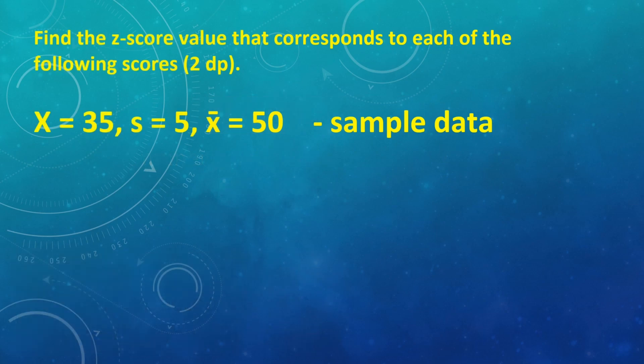Next to this is you're going to find the z-score. Given the following sample data, you're going to use the z-score formula to find the z-score of the given. Afterwards, you're going to substitute the given and manipulate. The answer is negative 3.